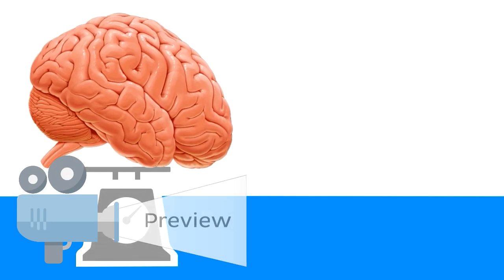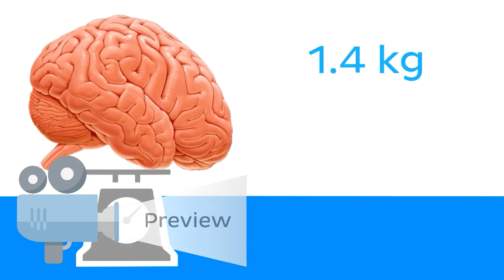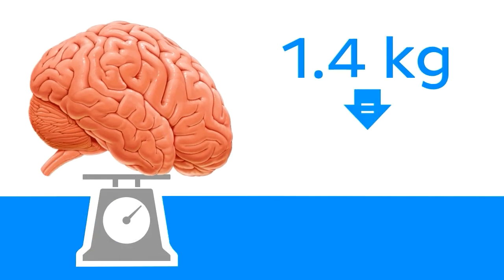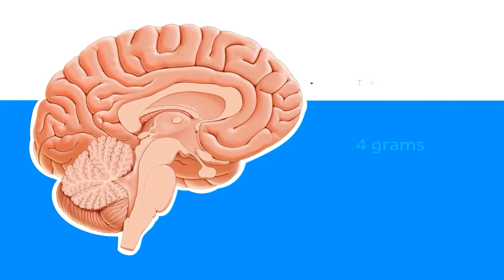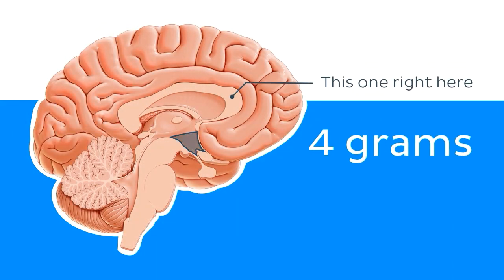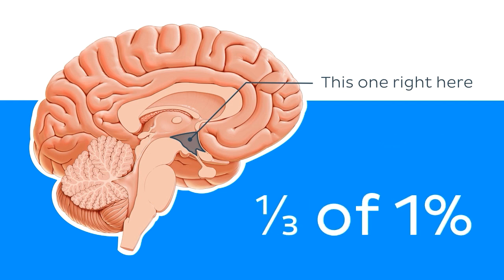Did you know that the weight of your average human brain is approximately 1.4 kilograms? That's 1,400 grams. What if I told you that one little part of your brain weighing just 4 grams, or just one-third of a percentage of your brain, is a vital epicenter for your hormone production, behavioral patterns, and involuntary or subconscious body functions?